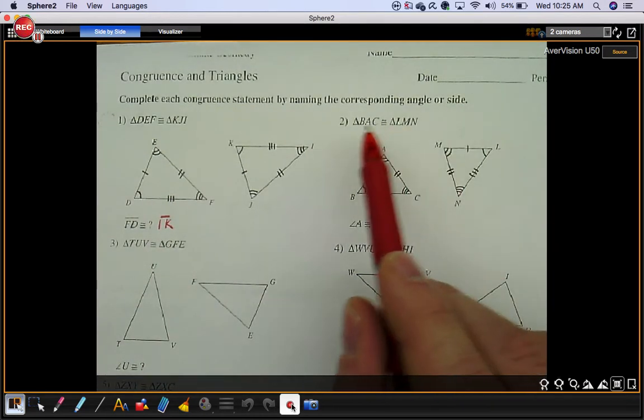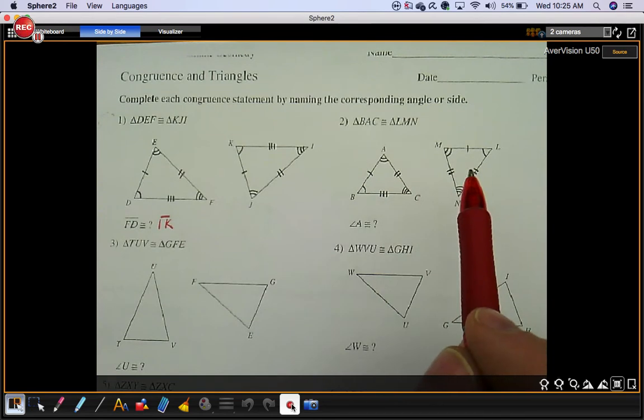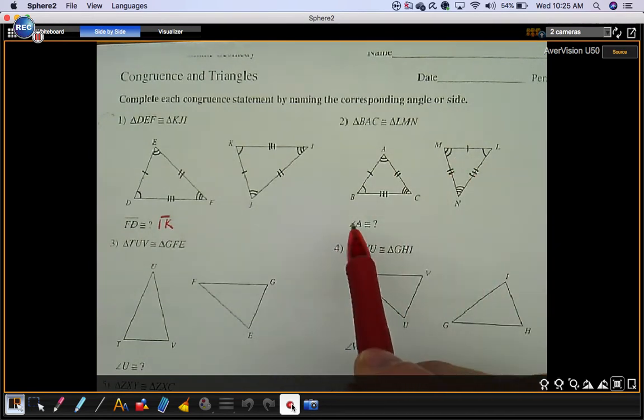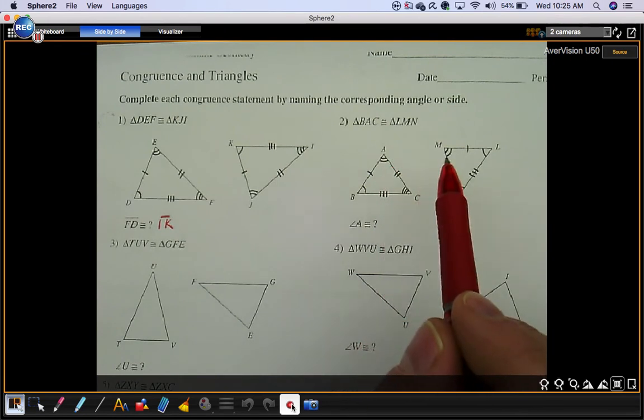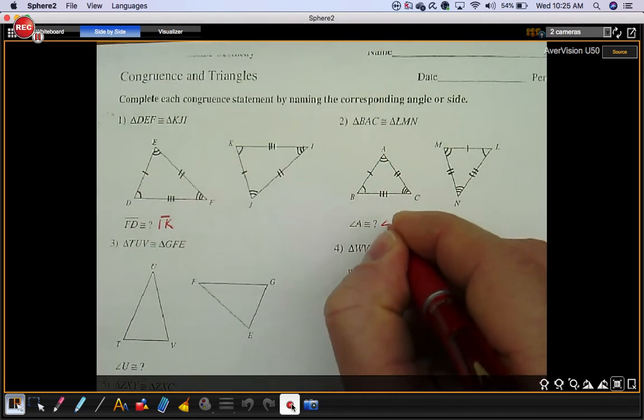Number two, they give you congruent triangles. That means you know six things. Here's the six things. What's angle A congruent to? Angle A has two arcs. Angle M has two arcs. So angle A is congruent to angle M.